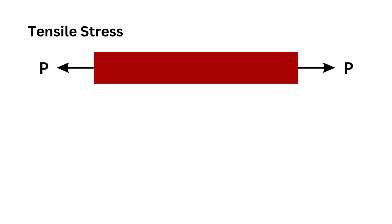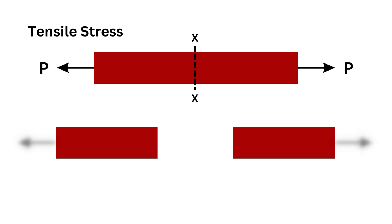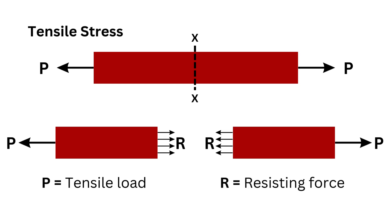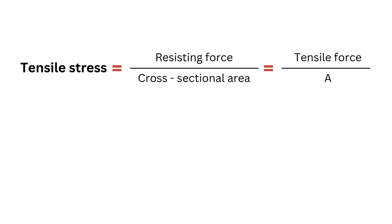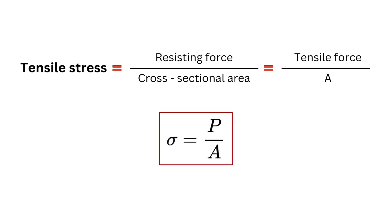Consider a bar subjected to a tensile force P at its ends. Consider a section XX which divides the bar into two parts. The left part will be in equilibrium if tensile force equals resisting force. Therefore, tensile stress equals resisting force divided by cross-sectional area, and since resisting force equals tensile force, tensile stress equals tensile force divided by cross-sectional area.